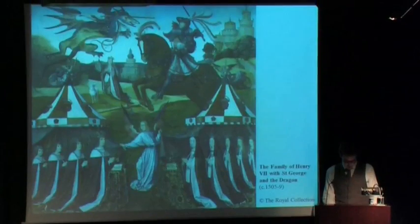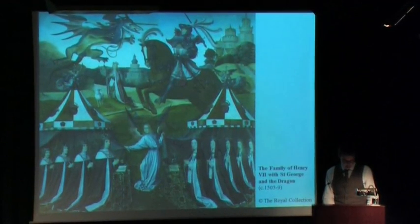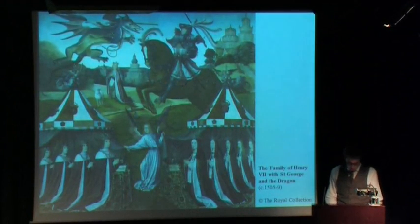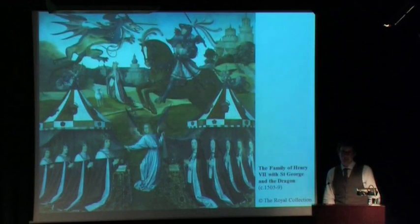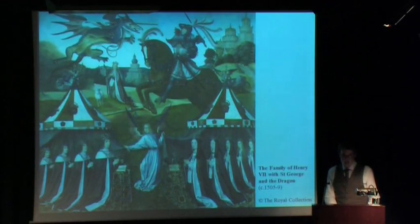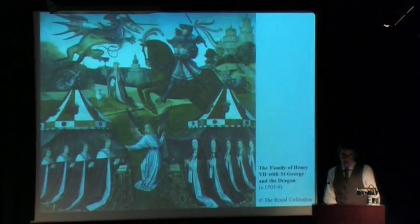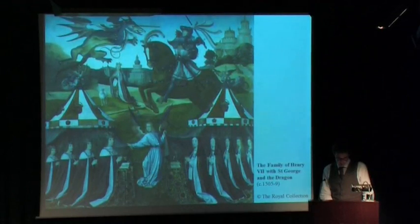Successful royal dynasties often result from politically expedient marriages. In England, such a marriage occurred in 1486 when Henry VII married Princess Elizabeth of York. They both appear here with their seven children in a portrait of around 1505. In August 1485, Henry Tudor had defeated and killed Elizabeth's uncle, King Richard III, at the Battle of Bosworth. Their marriage united two rival royal dynasties — the houses of Lancaster and York — ending an intermittent but often brutal civil war for the English throne that had lasted almost 30 years. The Tudor period begins with Henry's seizure of the throne in 1485 and ends with the death of his granddaughter Elizabeth I in 1603.